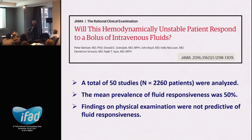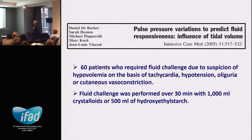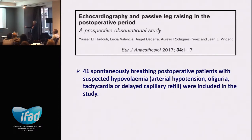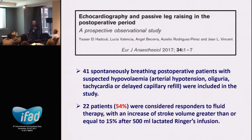Findings on physical examination are not predictive of fluid responsiveness. In a 2005 study from a major Belgian intensive care center, 60 patients judged hypovolemic because of tachycardia, hypotension, oliguria, or vasoconstriction received a hefty amount of fluid, and only 50% responded — even patients judged by the best clinicians to be hypovolemic. In 2017, the same group studied 41 spontaneously breathing patients with suspected hypovolemia based on the same physical signs, and again only 50% responded to fluid. Nothing has changed over all these years. This is physiology, and this is the challenge.